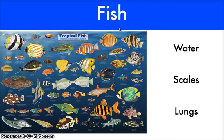Fish live their whole lives in water. They have gills on the side of their head that take in oxygen as water moves over them. They are covered with scales, which are small, thin, flat plates that help protect the fish. Fish have different sizes and shapes.